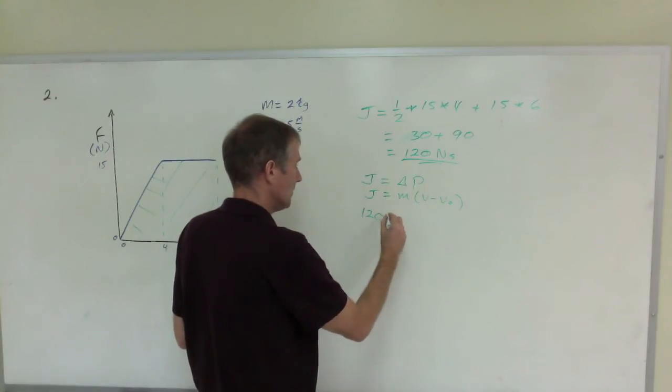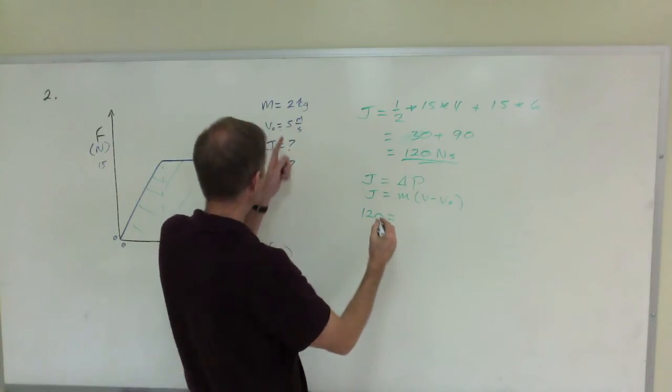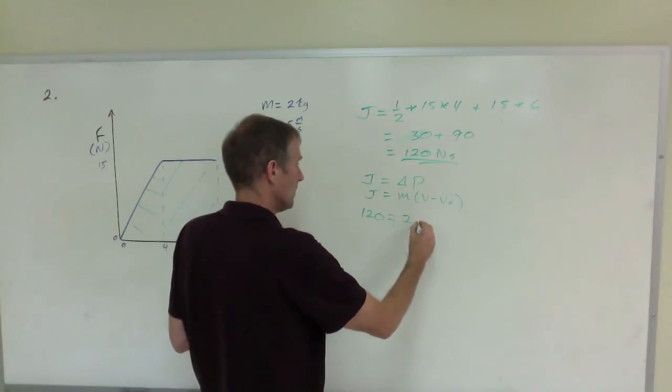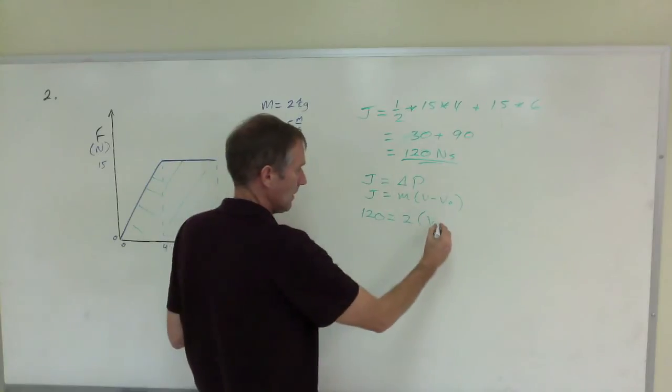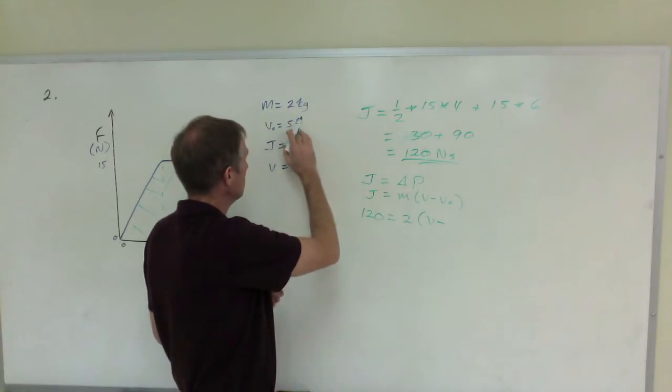This is 120, the impulse. The mass, I said, is 2 kilograms. The final velocity is what I'm looking for, and the initial velocity is 5.